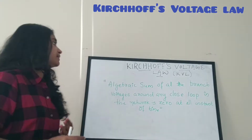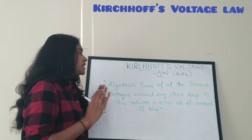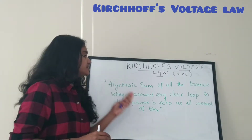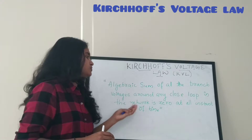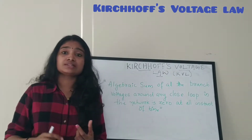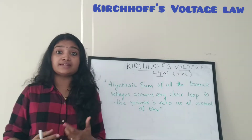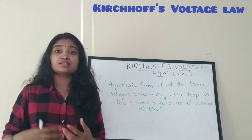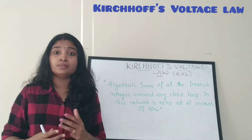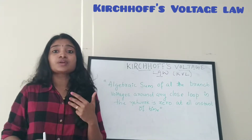Kirchhoff's voltage law states that the algebraic sum of all the branch voltages around any closed loop in the network is zero at all instants of time. That is, if you take the sum of all voltages present inside a closed loop in a network at any instant of time, the algebraic sum of these voltages will be equal to zero.